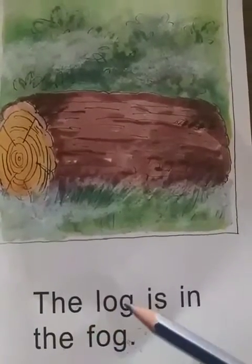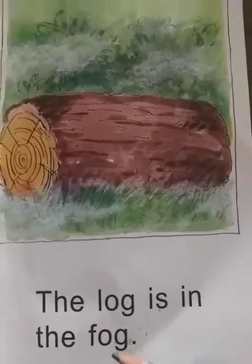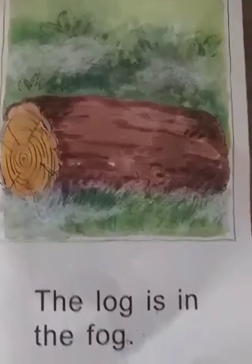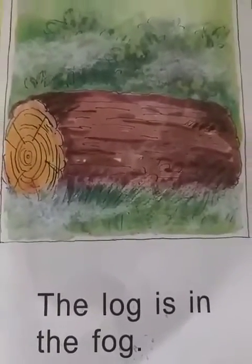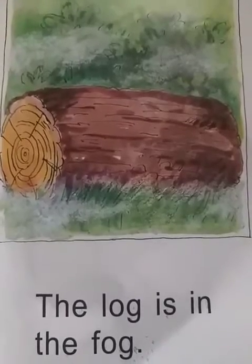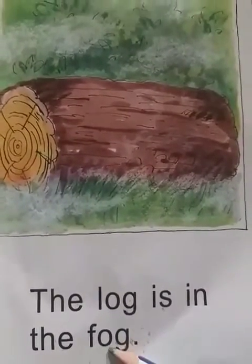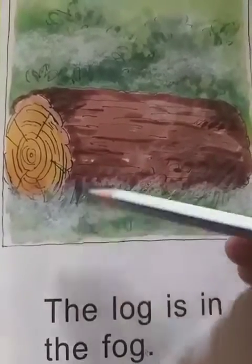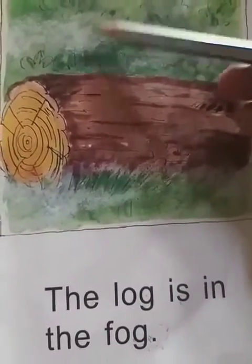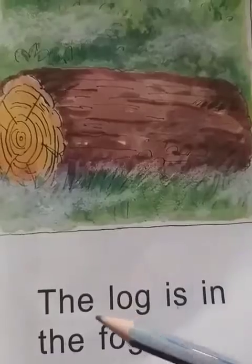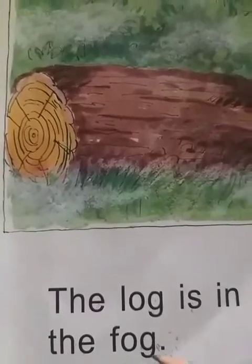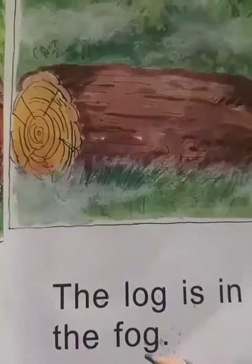Now look here — The log is in the fog. Baita, fog means dhund — jab bhoot saari thandi ho jaati hai na, aur aap kehti ho mamma bhoot thund lag rahi hai. Toh usko hum kya kahtay hain? Winters. Aur yye fog kab aati hai? Fog winters mein aati hai. Is picture mein dhekho — jo aapko white portion dikhayi de raha hai, isko hum fog kahtay hain. Now read this line once again: The log is in the fog. L-O-G log. F-O-G fog.